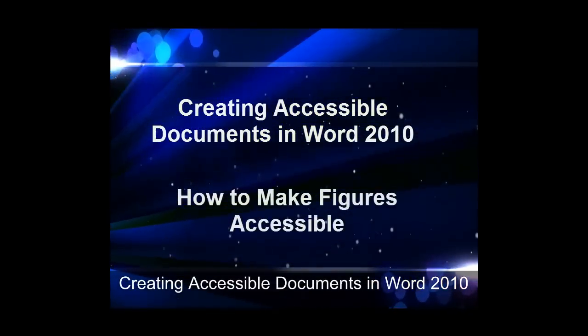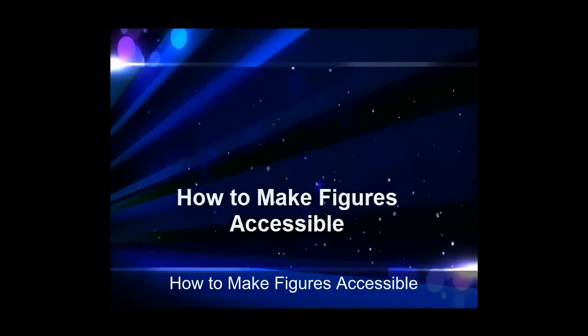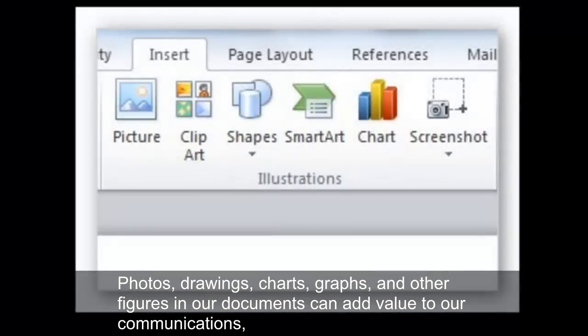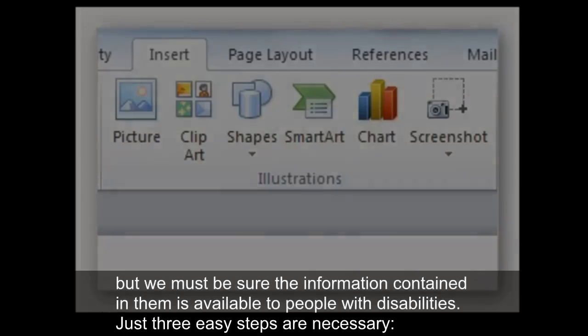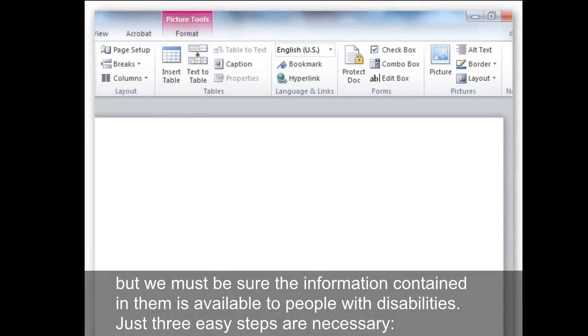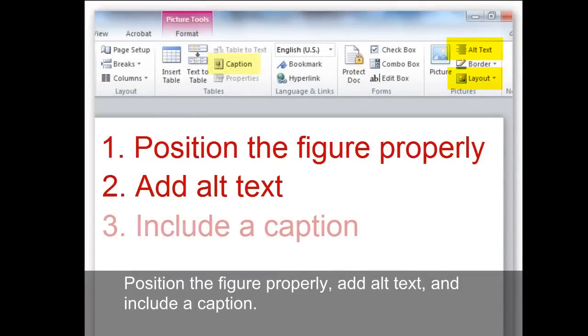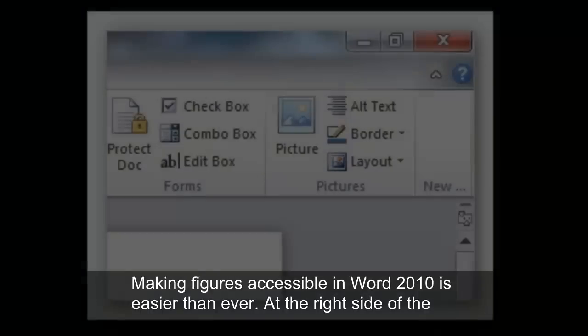Creating Accessible Documents in Word 2010: How to Make Figures Accessible. Photos, drawings, charts, graphs, and other figures in our documents can add value to our communications. But we must be sure the information contained in them is available to people with disabilities. Just three easy steps are necessary: position the figure properly, add alt text, and include a caption. Making figures accessible in Word 2010 is easier than ever.